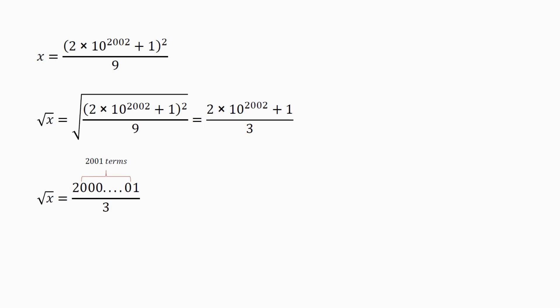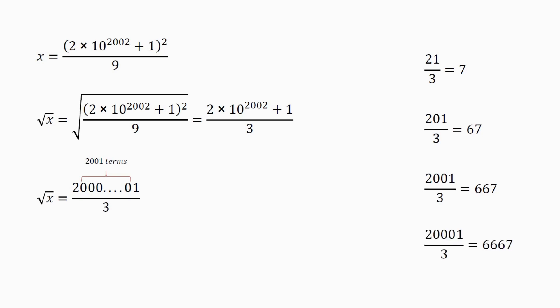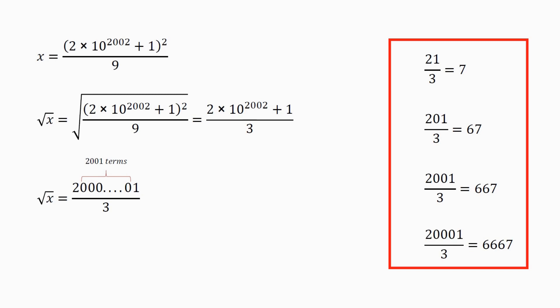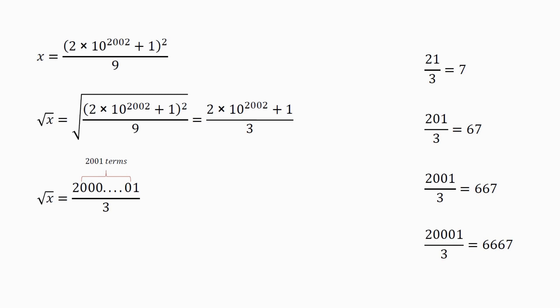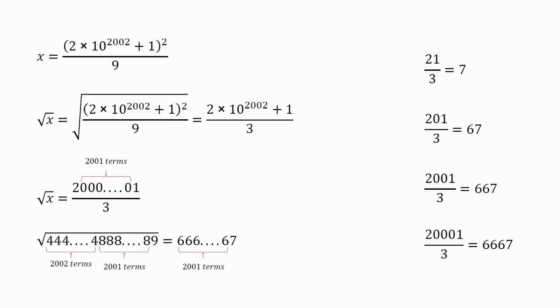To perform this division we use a trick. We know 21 divided by 3 equals 7. From these numbers we can create a general assumption: if we look at the zeros between 2 and 1, the number of zeros equals the number of 6s in the answer. Applying the same logic to our question, the square root of the original number equals 2 followed by 2001 sixes followed by 7.